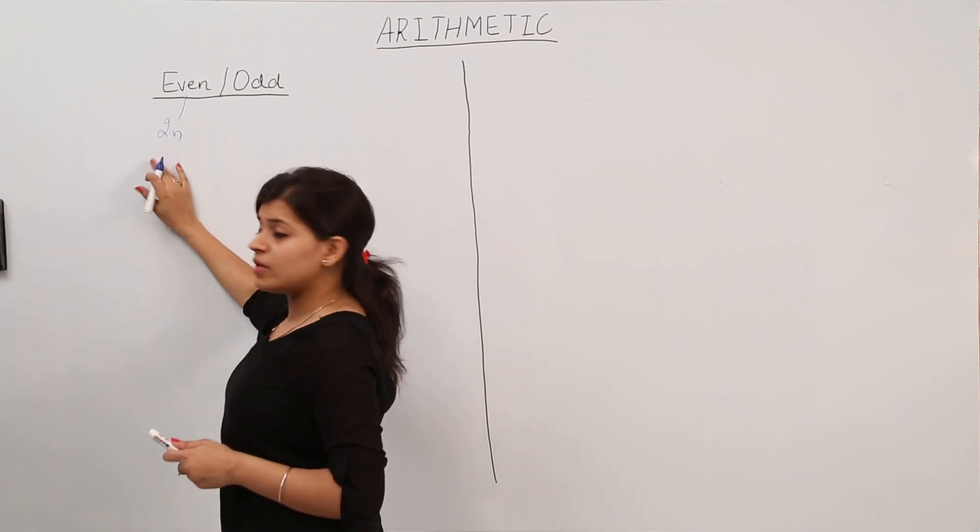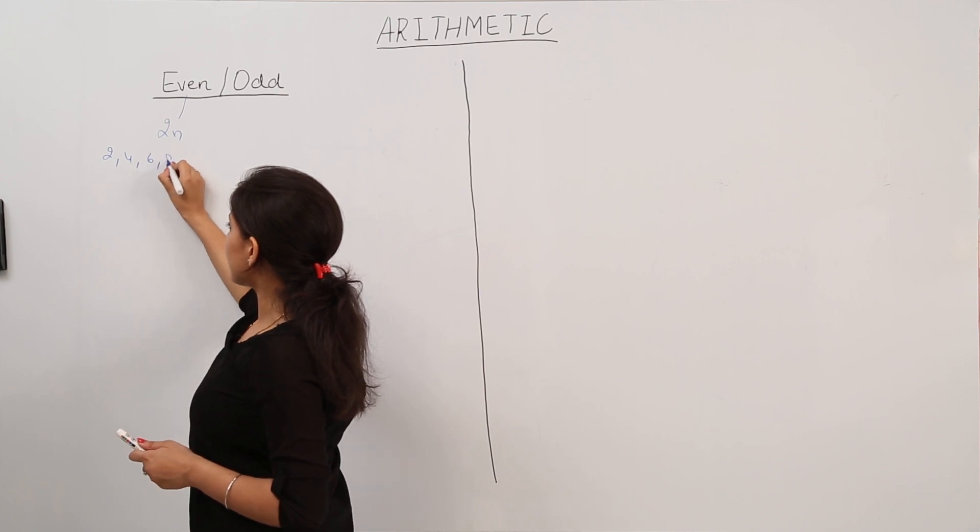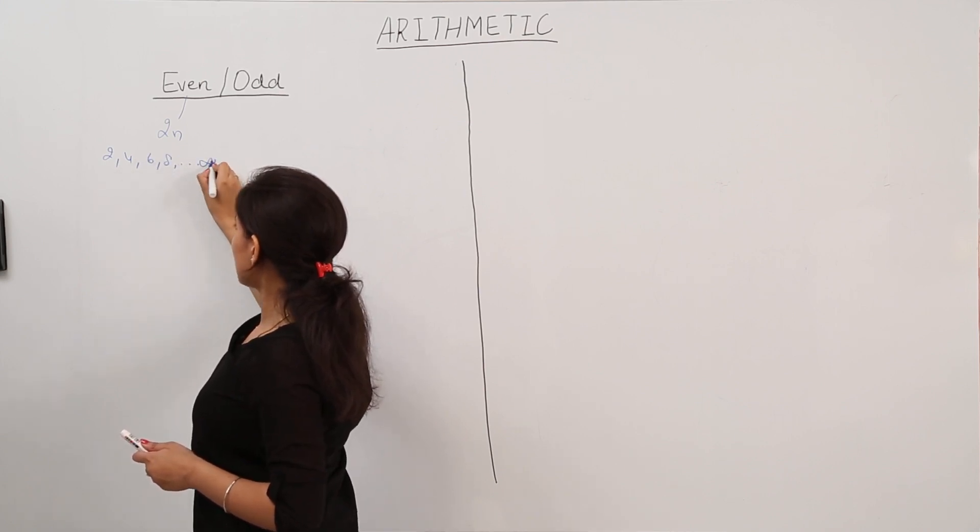So the examples of even numbers are 2, 4, 6, 8, and so on, up to infinity.